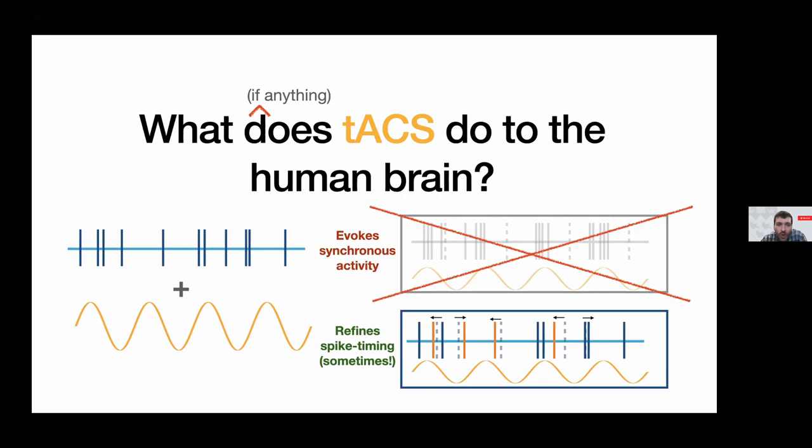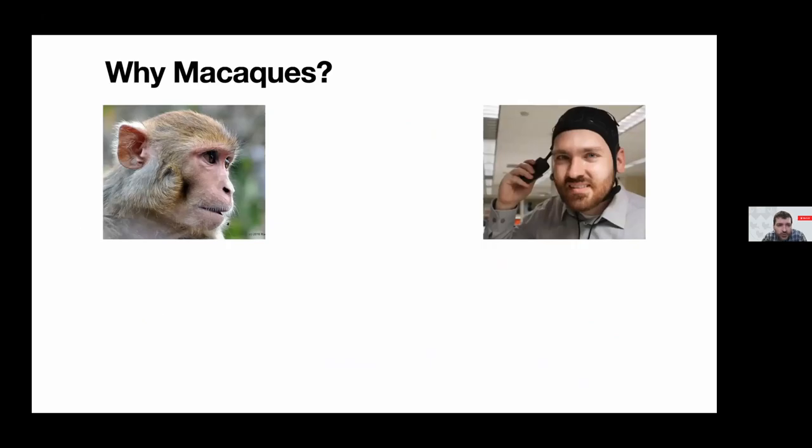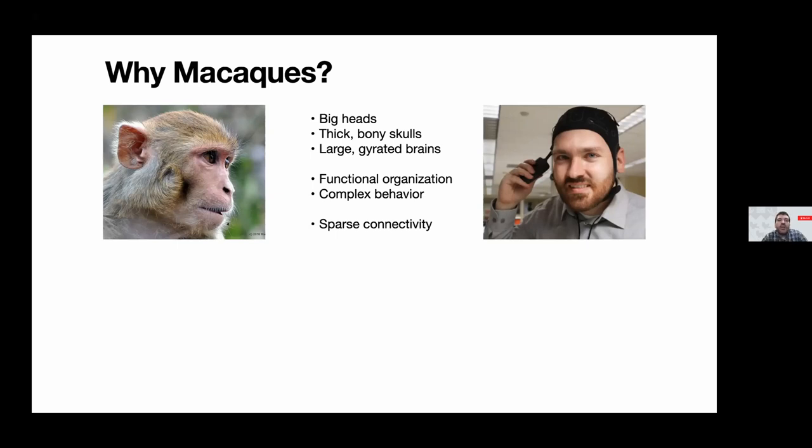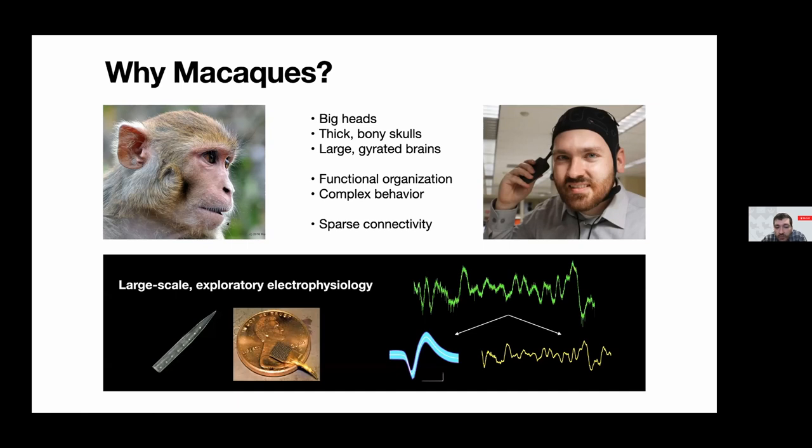So why do we work with macaques? Here I'm going to show you two pictures on the left, one of me and one of a monkey. And you might be able to see that there's a fairly strong similarity. In particular, we both have big heads. Inside the heads, there are thick bony skulls. And inside the skulls, there are large gyrated brains. The functional organization of our brains is fairly similar and it supports complex behavior, often visually guided. And these similarities persist, all the way from the gross anatomical levels and behavioral levels, down to the microstructure. So macaques and humans both have fairly sparse synaptic connectivity, as compared with rodents and other models. So all these factors may affect how TES affects a brain.